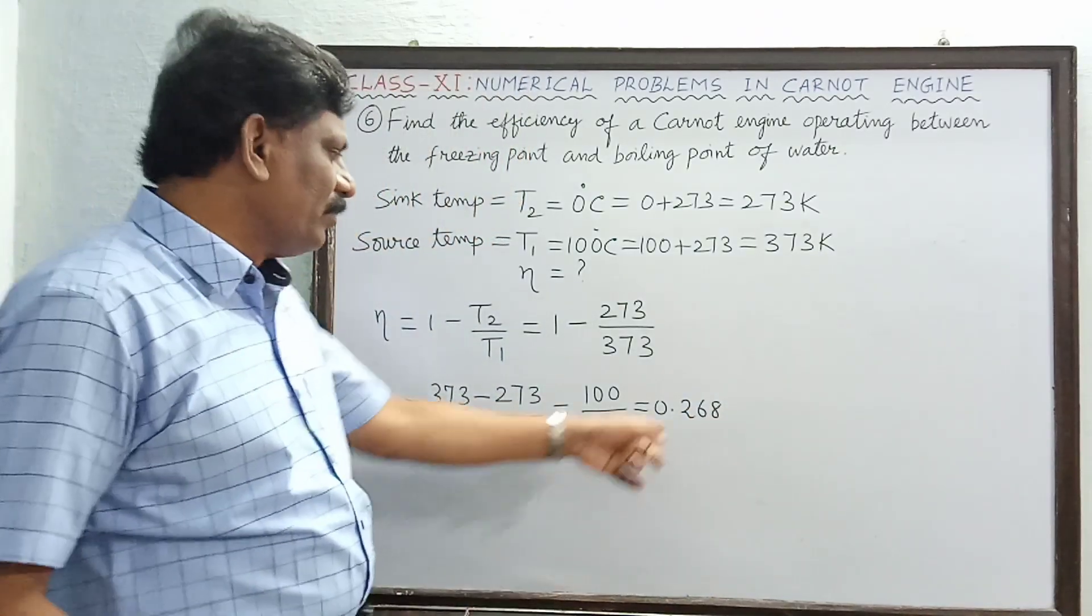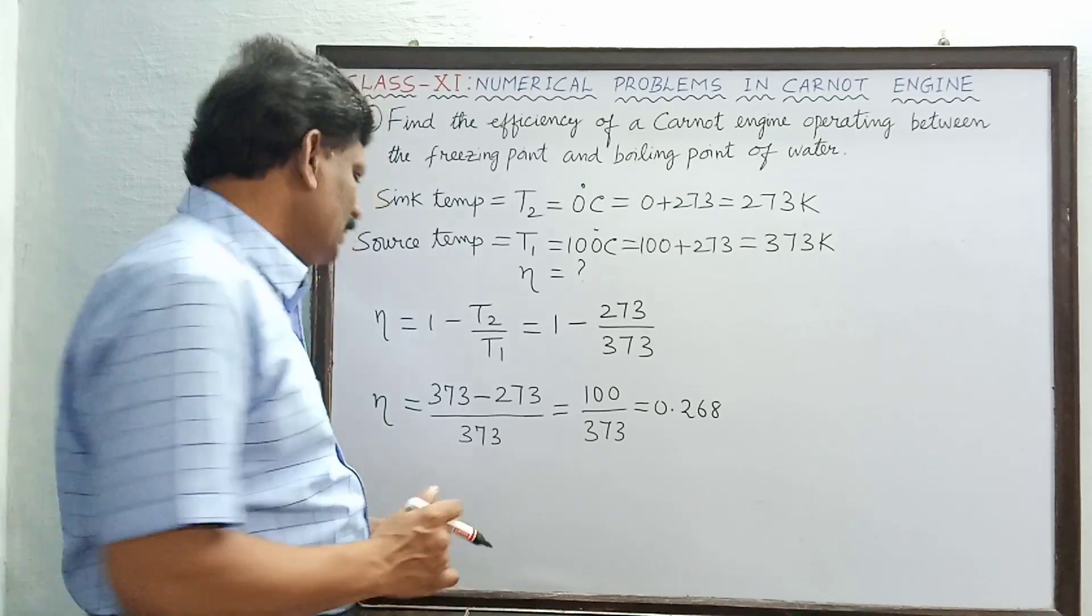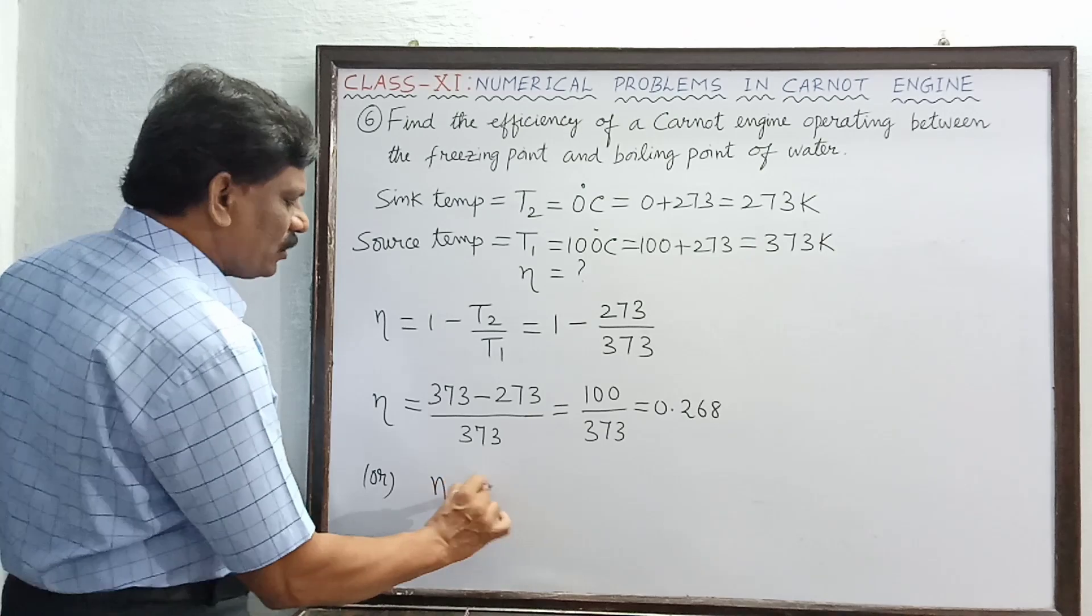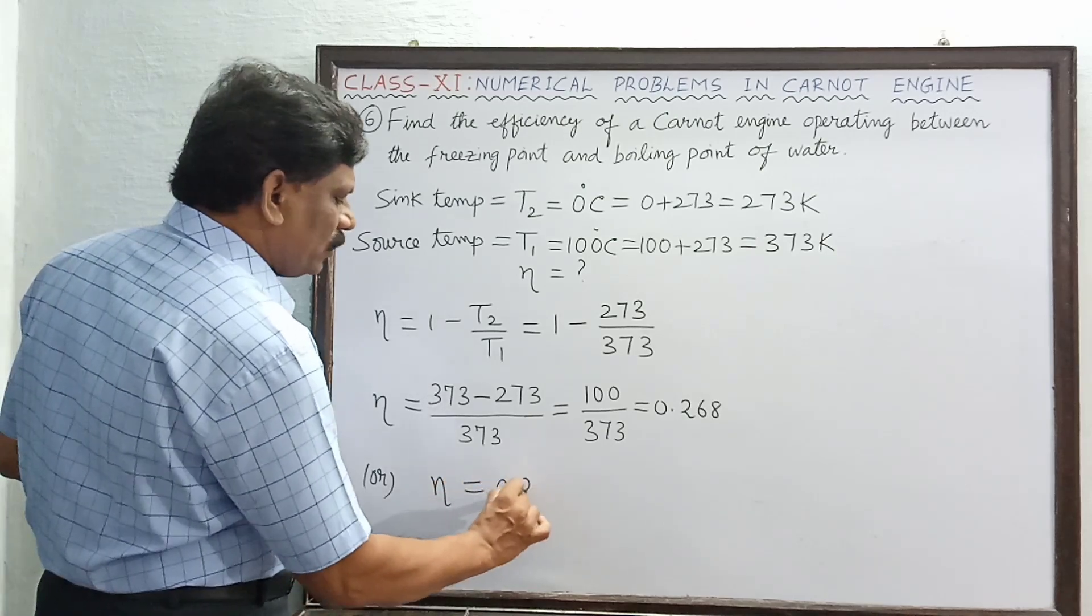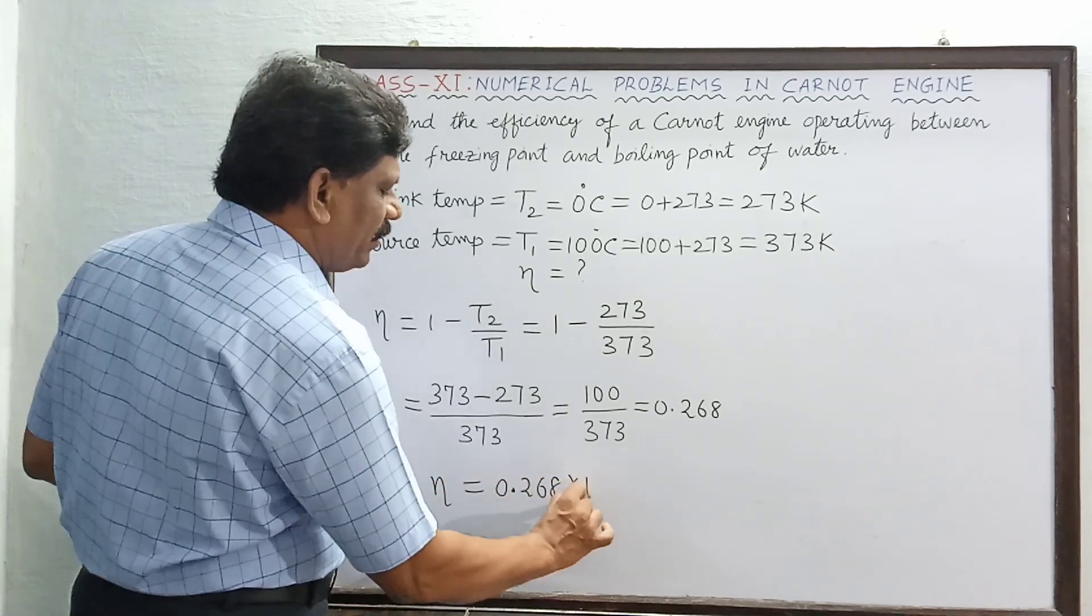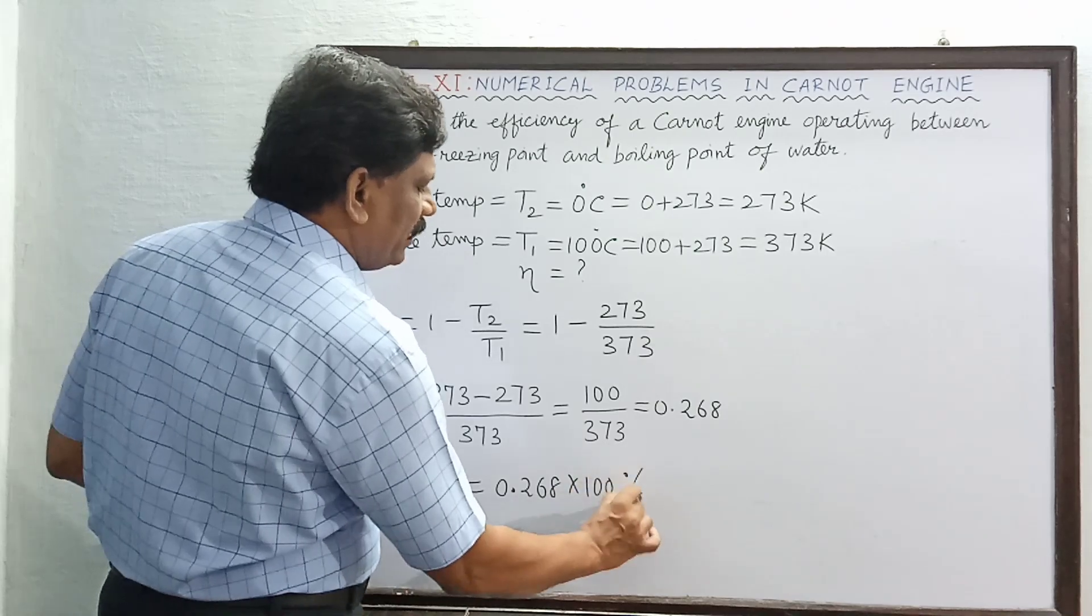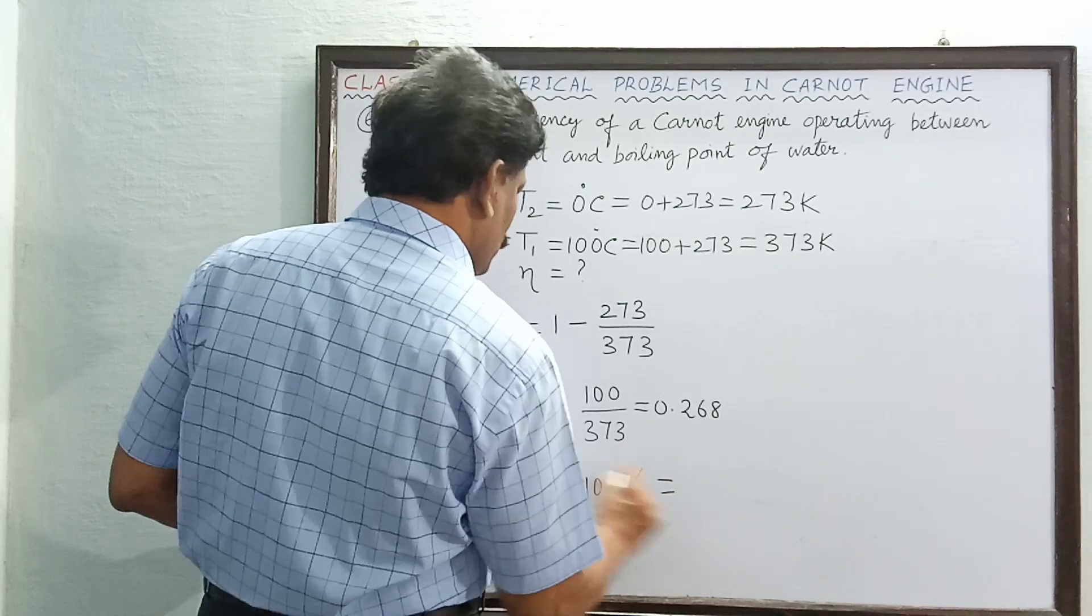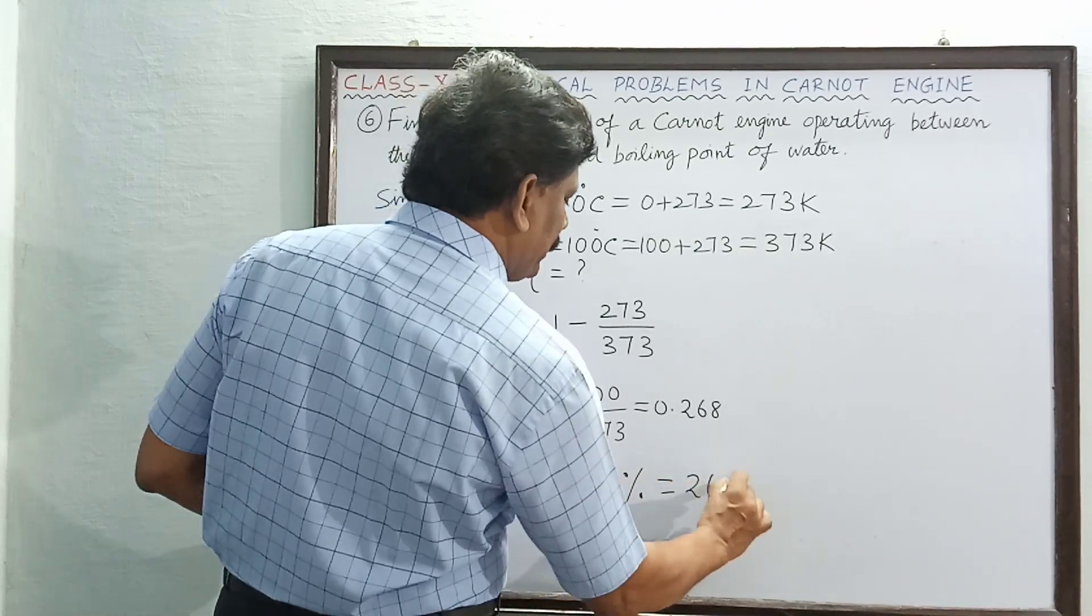In percentage, if you convert it, you have to multiply this by 100. So eta is also equal to 0.268 multiplied by 100, and it is a percentage efficiency. So this is equal to 26.8 percent.